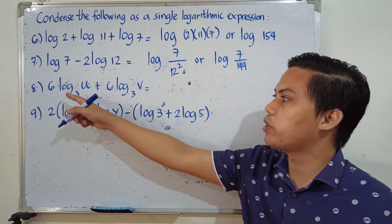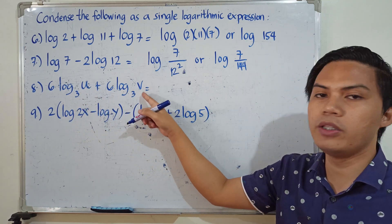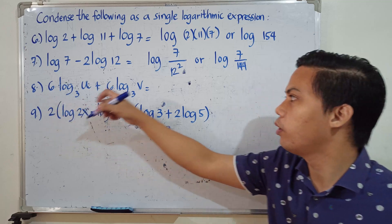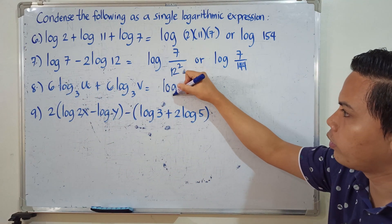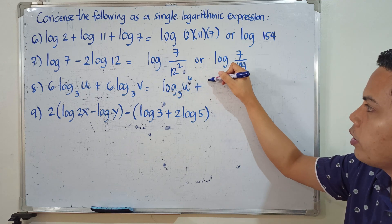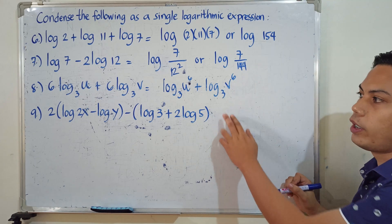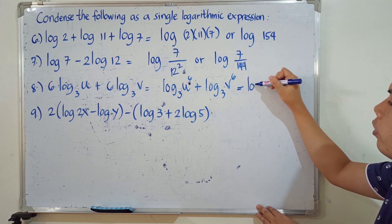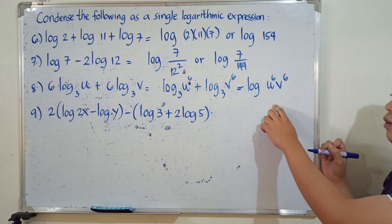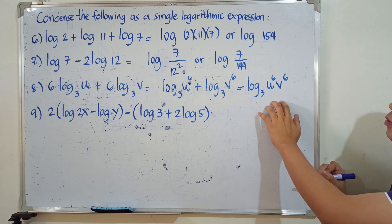Number 8: 6 times the logarithm of u to the base 3, plus 6 times the logarithm of v to the base 3. We apply both the power rule and the product rule. First, the coefficients become exponents: logarithm of u⁶ to base 3, plus logarithm of v⁶ to base 3. Then, combining them using the product rule, the final answer is the logarithm of u⁶ times v⁶, to base 3.